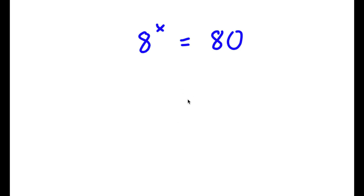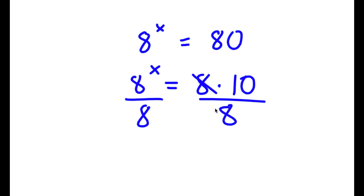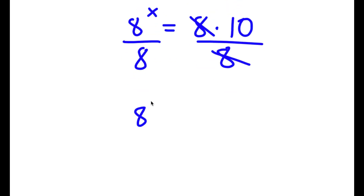In this problem I have 8 to the power of x is equal to 80. I'm going to first start by rewriting 80 as 8 times 10. So I have 8 to the power of x is equal to 8 times 10, and now I'm going to divide both sides by 8, so these two cancel out and I get 8 to the power of x over 8.